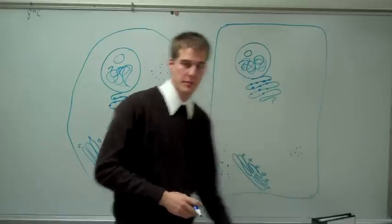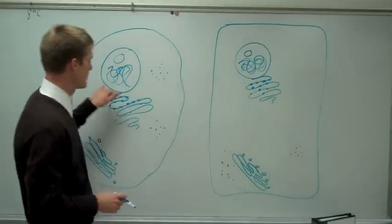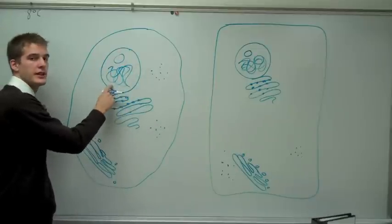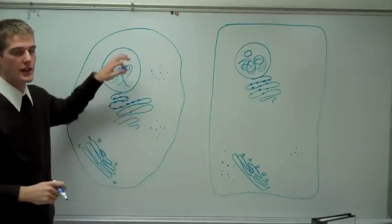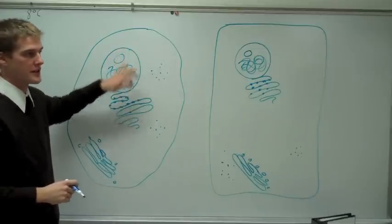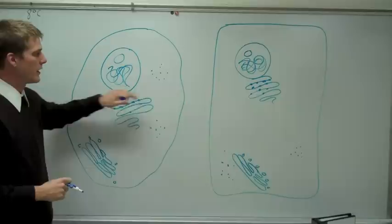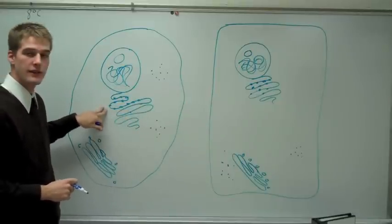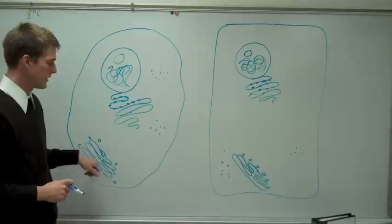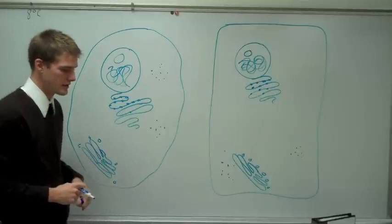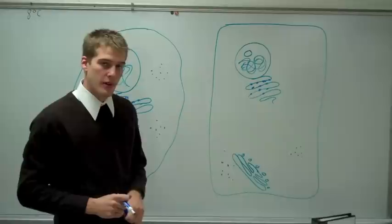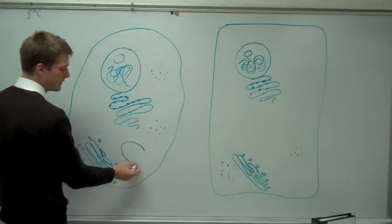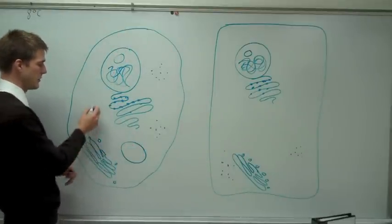Surrounding the nucleus is the nuclear membrane. So we have the nuclear membrane, the nucleus, the chromosomes, and the nucleolus — all within the nucleus. We also have ribosomes, the smooth and rough endoplasmic reticulum, and the Golgi complex. The next thing found in both are the vacuoles. A vacuole is just a storage center; there can be more than one.